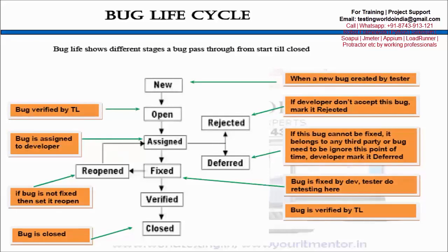Welcome to the testing world. In this session I am going to explain bug life cycle. First of all we need to understand what do you mean by bug life cycle. While doing software testing, if I find any bug, we are going to report this bug into any bug reporting tool like Jira, Bugzilla, Mantis. When we report any bug into these tools, reporting means we are filling the information of the bug into the tool so that anybody can see it and do actions on that.